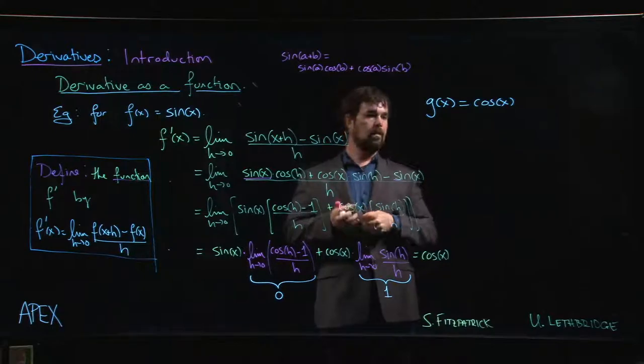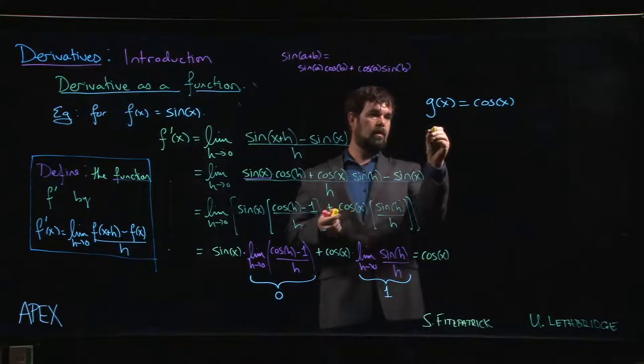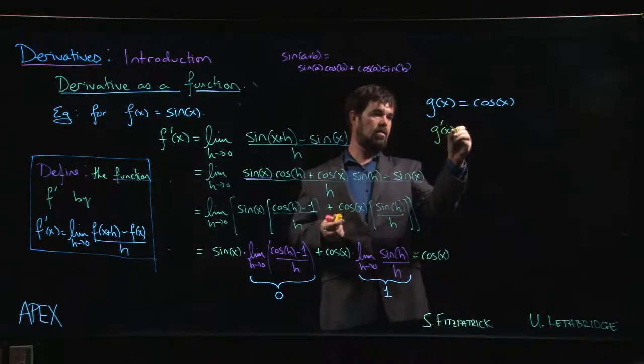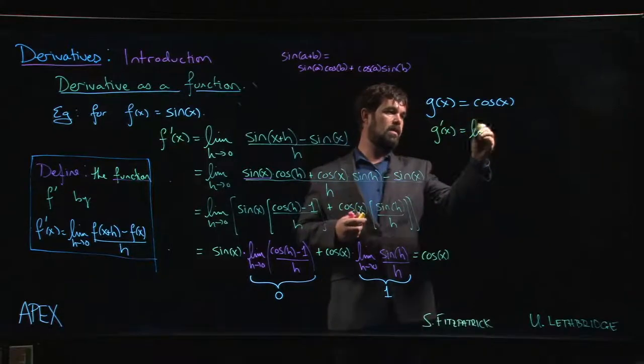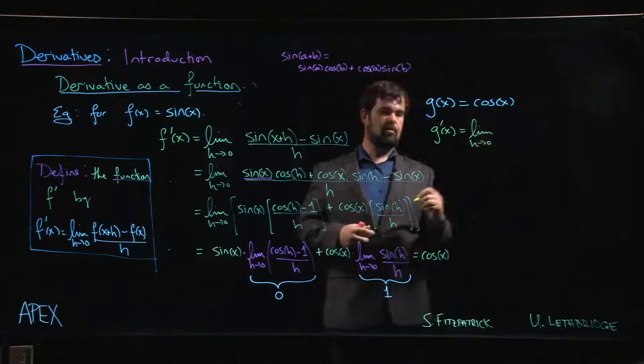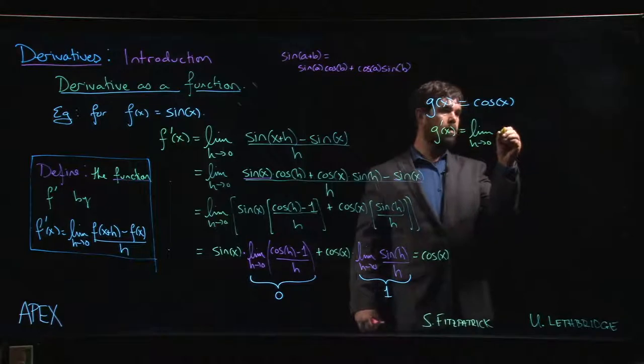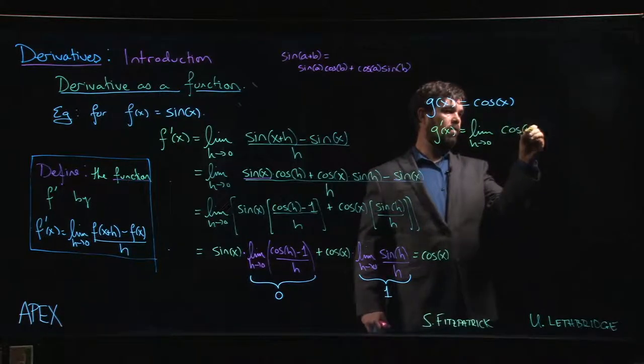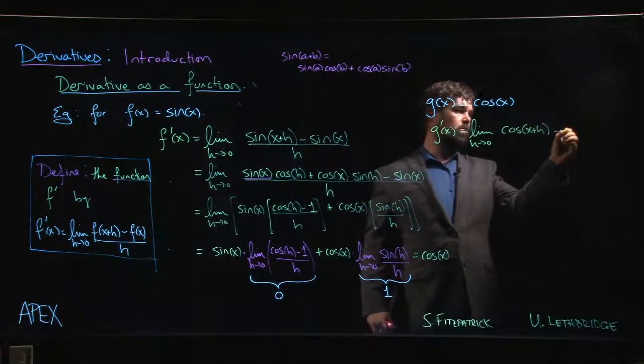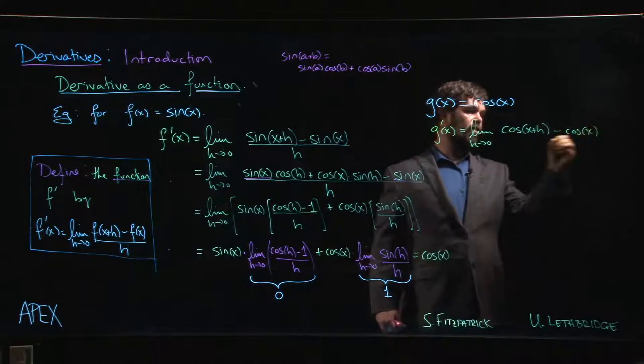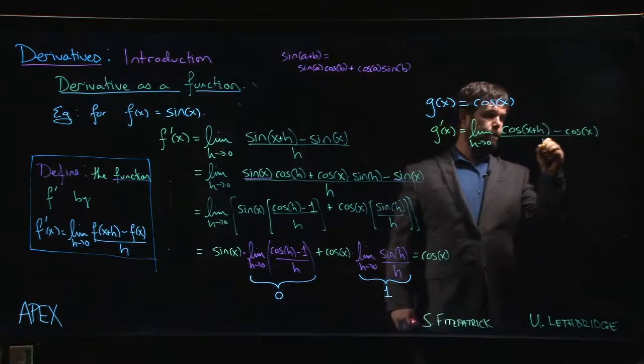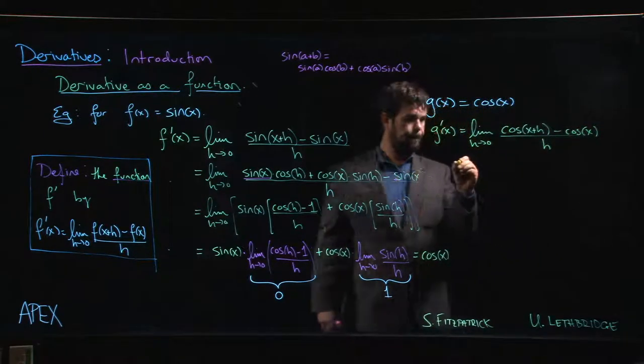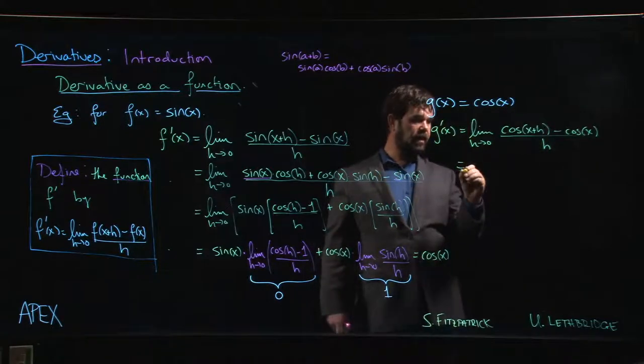Well, let's see. g'(x) will be the limit as h goes to zero of [cos(x+h) - cos(x)]/h, and we have a trig identity here as well.